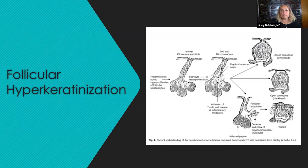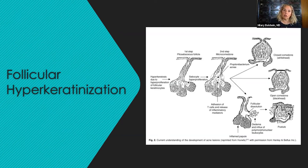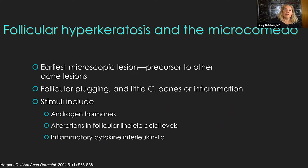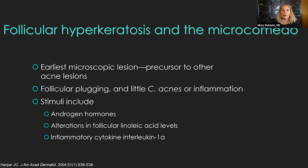Now let's move on to follicular hyperkeratinization. This picture depicts the microcomedo in the middle, and on the right the pilosebaceous unit chock-full of dead skin cells and sebum forming the open and closed comedones. We start with follicular hyperkeratosis and the microcomedo — the earliest microscopic lesion. The stimuli to microcomedo formation are probably androgen hormones, but also the alteration in linoleic acid — a reduction in linoleic acid — as well as the inflammatory cytokine interleukin-1-alpha.